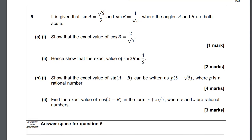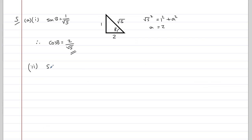In part 2, it says, Hence show that the exact value of sine 2B is 4 fifths. Well, I can use the double angle formula to get sine 2B, and we get 2 sine B cos B. This is one you should really memorise for the exam. You can derive it sometimes you're asked to in the exam, so make sure you can do that as well.